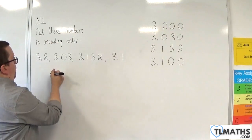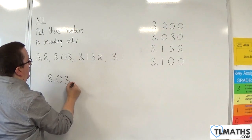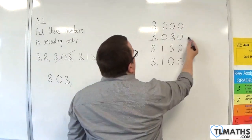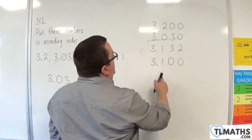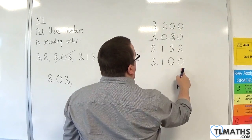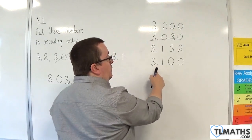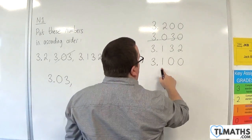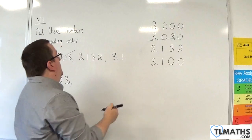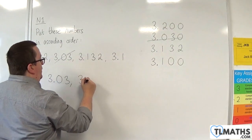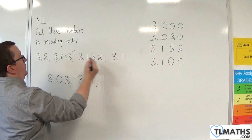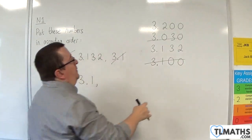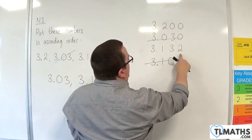So the smallest is 3.03. The next largest will be 3.100 — notice how I'm not saying '3.100', you would never say that — so 3.1. That is the next largest.